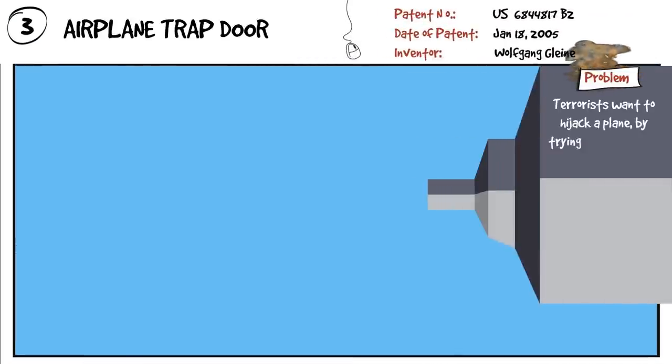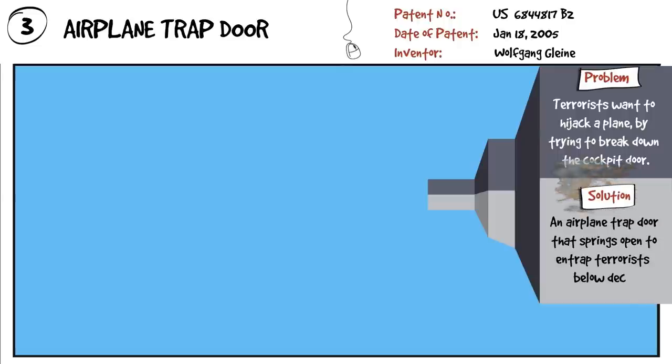Airplane trap door. Terrorists want to hijack a plane by trying to break down the cockpit door. An airplane trap door that springs open to entrap terrorists below deck.